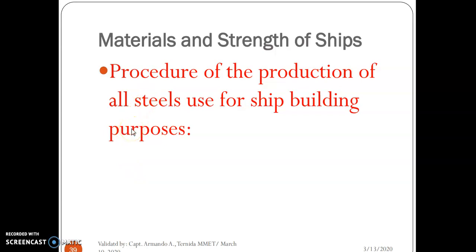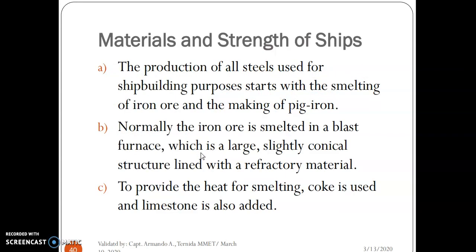Good morning class, stay safe. Our topic is materials and strength of ships — specifically the procedure of production of steels used for shipbuilding purposes. The production of steel used for shipbuilding starts with the smelting of iron ore and the making of pig iron.